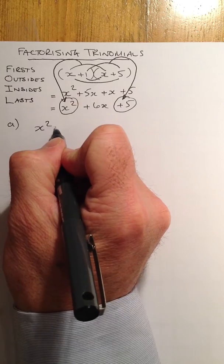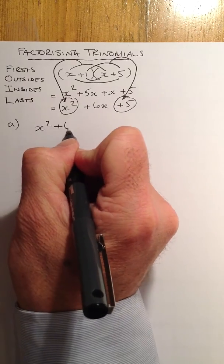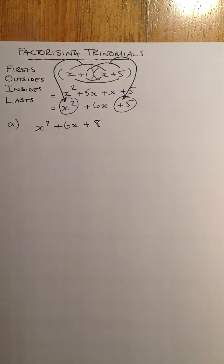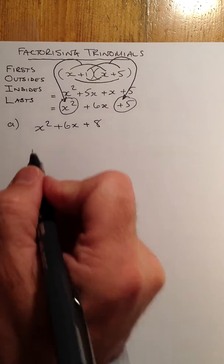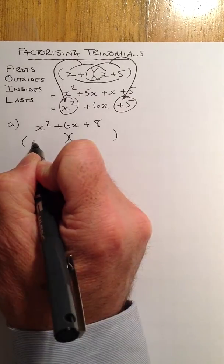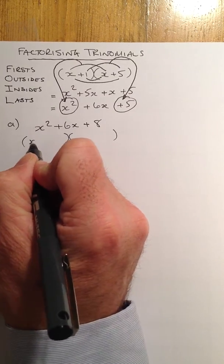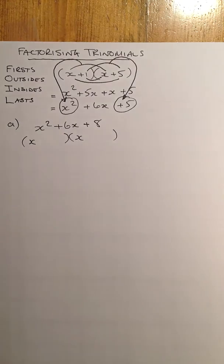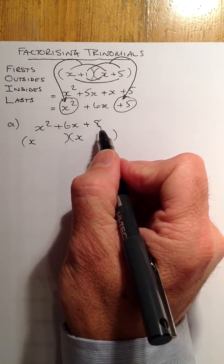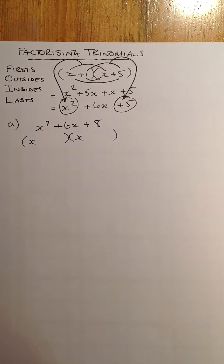We'll go for x squared plus 6x plus 8. What we're trying to do is put that into two brackets. So I'll start with my brackets. I know that x times x gives me x squared. For 8, I have to consider the factors of 8. So the factors of 8 would be 1 and 8, or 2 and 4.